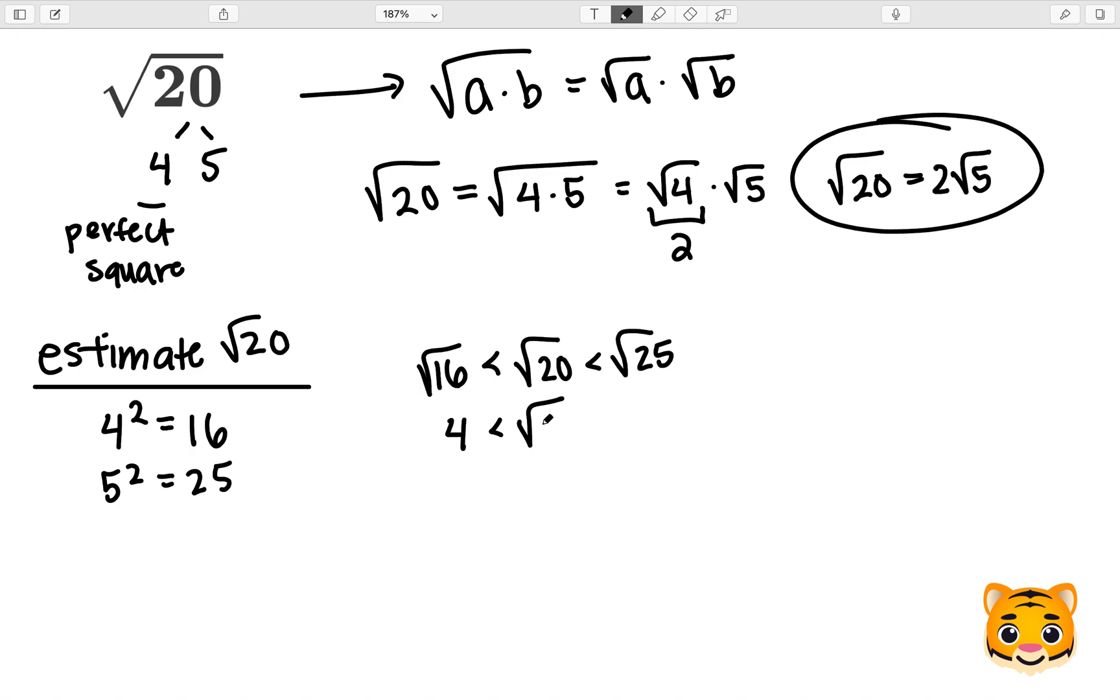And because 5 squared is 25, the square root of 25 is 5. Therefore, the square root of 20 lies between 4 and 5.